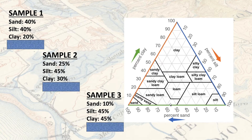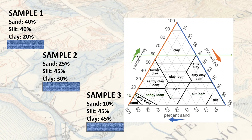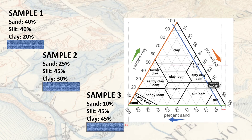This is the soil texture triangle. They don't often have colors on it, but I felt the colors would be helpful. Clay's arrow goes from down to up, and the lines are drawn in the same direction the numbers are oriented. For clay, the green line is horizontal. If a sample is 60% clay, you'd line it along the 60 line. The same goes for silt and sand. For sample one, we have 40% sand — sand is blue — so I grab my blue line and go 10, 20, 30, 40, bringing it all the way down along the 40% line.